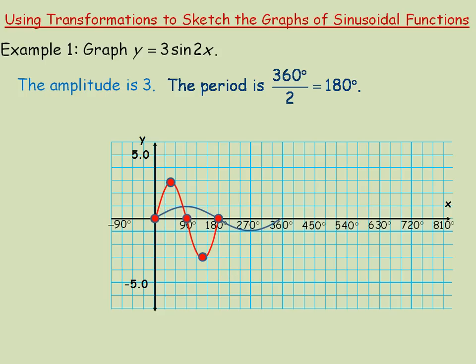If we want to graph more, we just duplicate exactly the same shape. There would be another period between 180 and 360, and then another one between 360 and 540, and we can keep going as long as we want. So there are four periods of y equals 3 sine 2x.